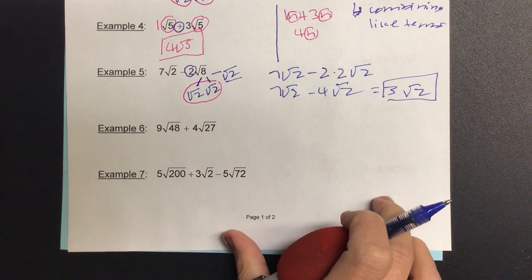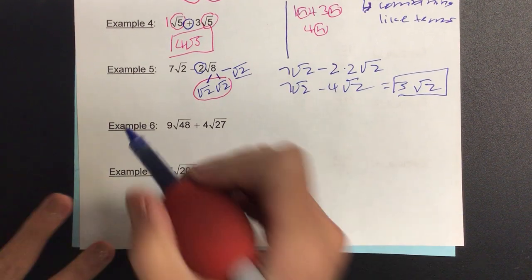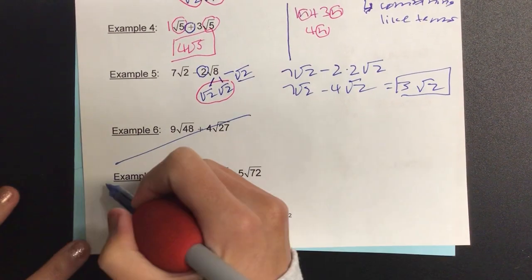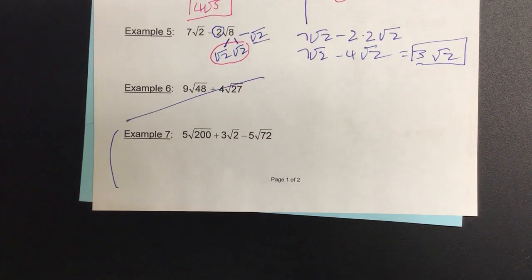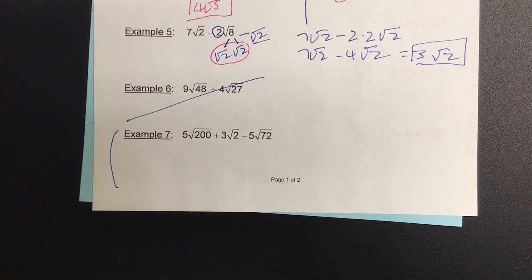All right, questions on that one? Okay, number six becomes kind of redundant, but I want you to try number seven with a partner.